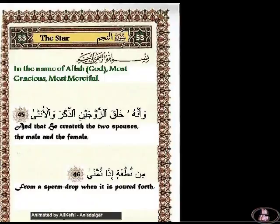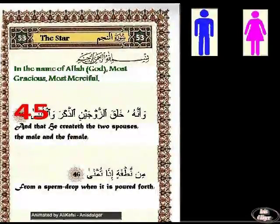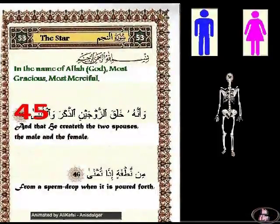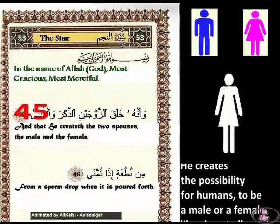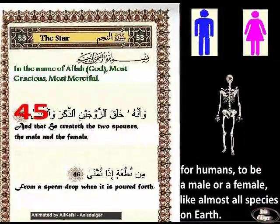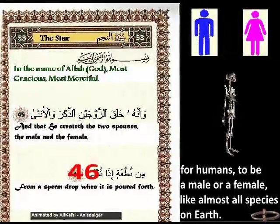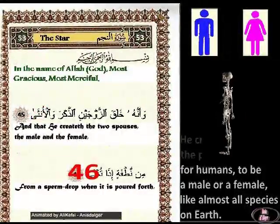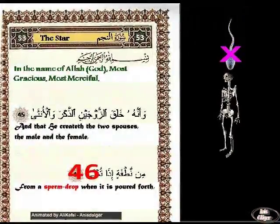According to verse 45, the Lord shows us that he creates the two elements of the pair — the male and the female. It creates the possibility for humans to be male or female, like almost all species on earth. Then in verse 46, he shows us that these two possibilities, male or female, are determined from the male sperm.